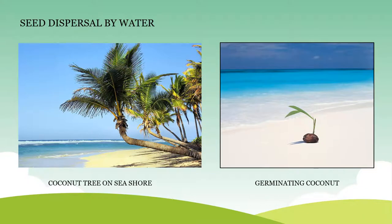Seed dispersal by water also occurs in coconut trees. Coconut trees generally grow along the banks of rivers or near the seashores. When the coconuts fall in water, due to the fibrous nature of the fruit, they get floated along the waves of the water. Whenever they touch the ground or soil after traveling a long distance, the seed germinates into a new plant.